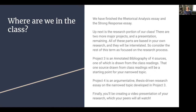Project 3 is an annotated bibliography with four sources. One is drawn from class readings as a starting point for your narrow topic, and three new sources that you'll find through your own research. Project 4 is an argumentative, thesis-driven research essay on the narrow topic that you developed in the annotated bibliography — you do the research first, then write the essay drawing on that research. After that, you'll create a video presentation of your research that all your peers will watch.